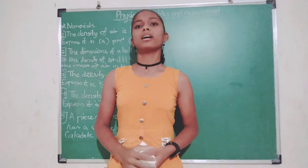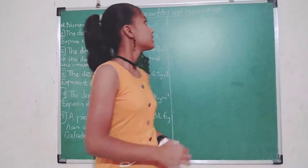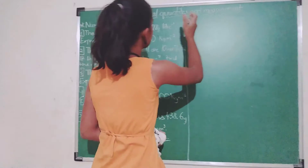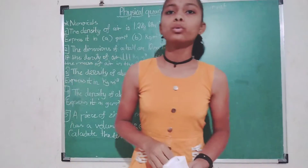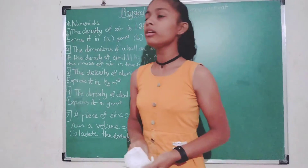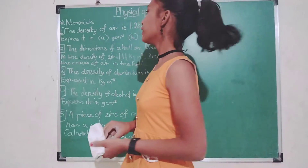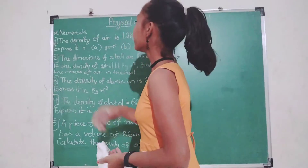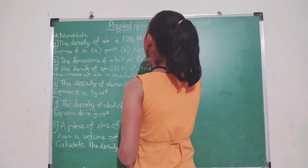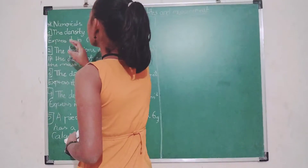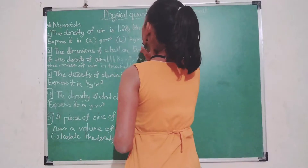Hi friends, I am Anushka. Our today's topic is some numericals on physical quantities and measurements. So let's solve our first numerical: the density of air is 1.28 gram per liter. Express it in gram per centimeter cube and kg per meter cube.